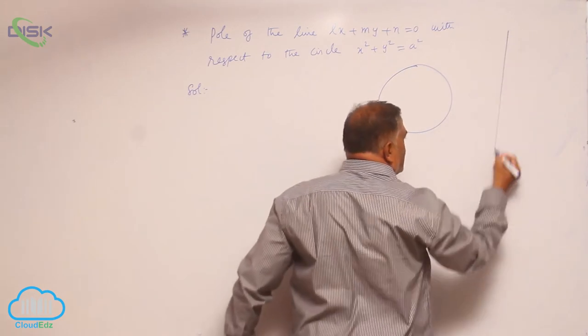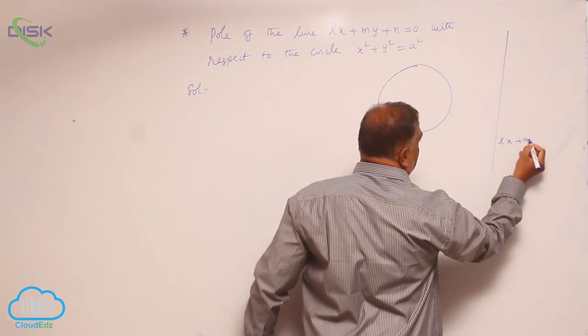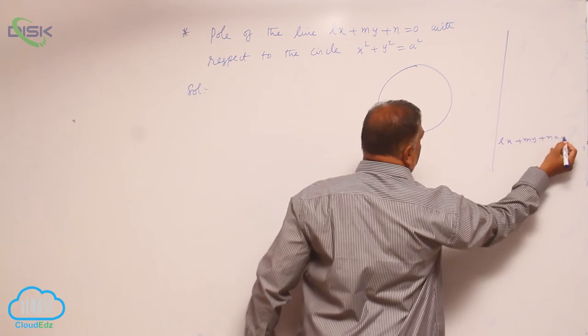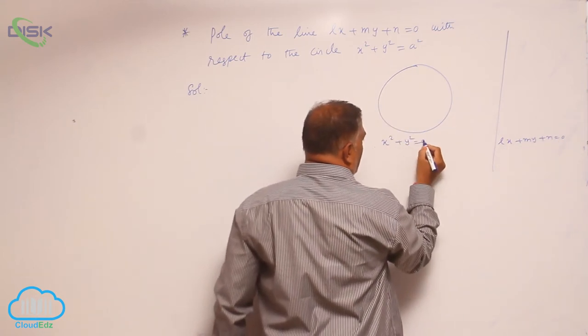Assume that this is the polar equation. Lx + my + n = 0, x² + y² = a².